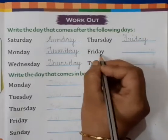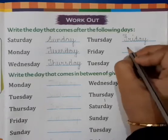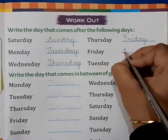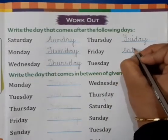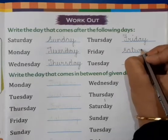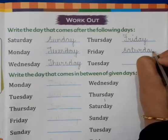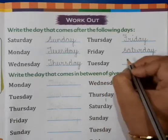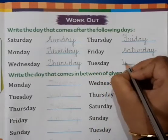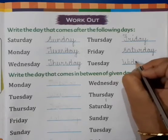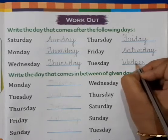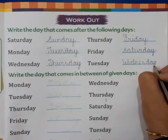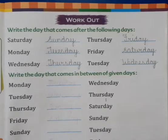After Friday, Saturday will come. Friday ke baad Saturday aata hai, so we will write S-A-T-U-R-D-A-Y, Saturday. Now next is Tuesday — Tuesday ke baad aata hai Wednesday. W-E-D-N-E-S-D-A-Y, Wednesday.